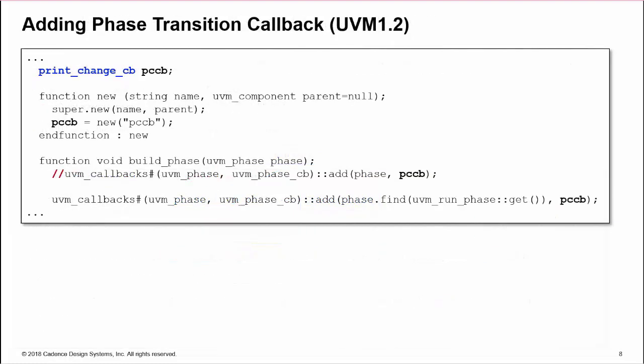To execute the callback, we must construct an instance here in the handle pccb, and then add the instance to a phase. Add is a static method of uvm_callbacks, parametrized for the type to which the callback will apply, uvm_phase, and the base type of the callback instance, uvm_phase_cb. Add has two arguments, the phase to which the callback is added, and the callback instance. You can add the callback to the current phase, using the phase argument of a phase method, as in the commented code here.